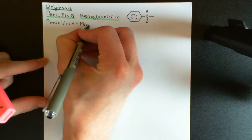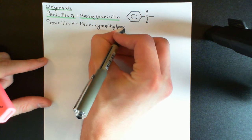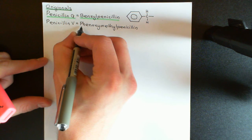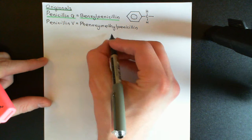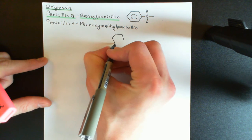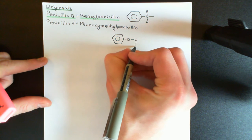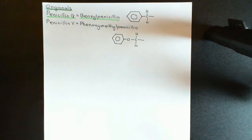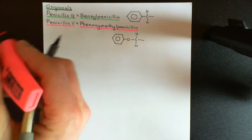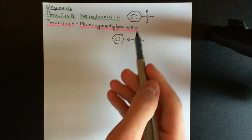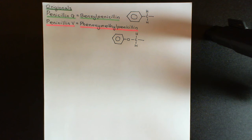Penicillin V's other name is Phenoxymethylpenicillin, which again describes the R group. We have a benzene ring (the 'phen'), attached to an oxygen atom for 'oxy' — giving 'phenoxy' — and then a methylene group, with the free bond attaching to the carbonyl carbon of the amide link on the core penicillin structure. So those are the R groups of Benzylpenicillin (Penicillin G) and Phenoxymethylpenicillin (Penicillin V), the two original penicillins.